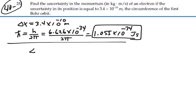Our uncertainty principle is that the uncertainty in the position times the uncertainty in the momentum is greater than or equal to h-bar. Hence the uncertainty in the momentum is greater than or equal to h-bar divided by the uncertainty in the position.